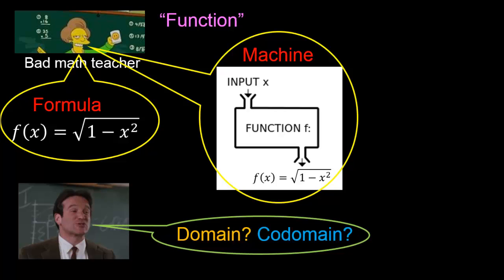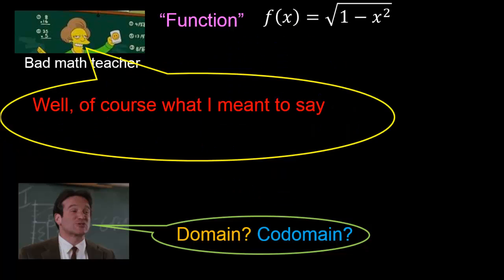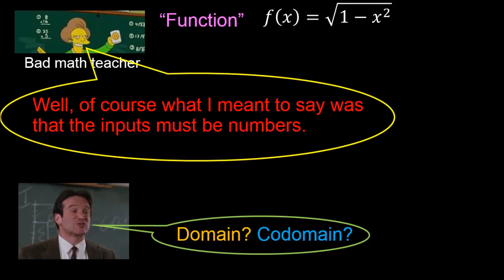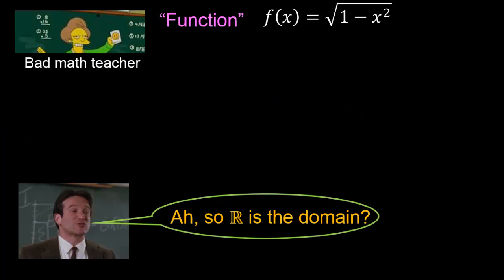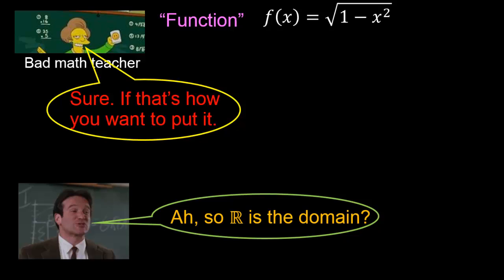With respect to the domain, Robin Williams is going to ask: what sort of inputs can we put into the machine? Could we put, for example, an apple into this machine? And will the machine then give us the square root of 1 minus apple squared? But this is clearly absurd. Of course what I meant to say was that the inputs must be numbers. Robin Williams says: so what you mean is that the domain must be the set of real numbers. Sure, if that's how you want to put it.